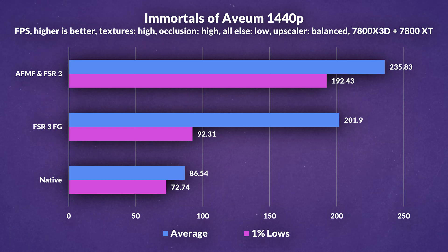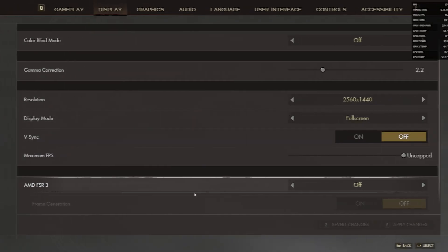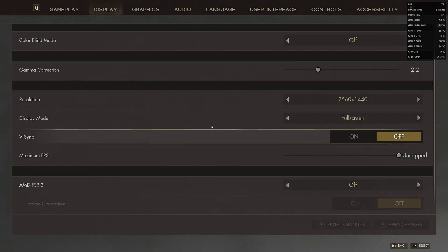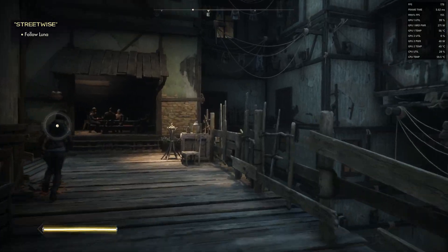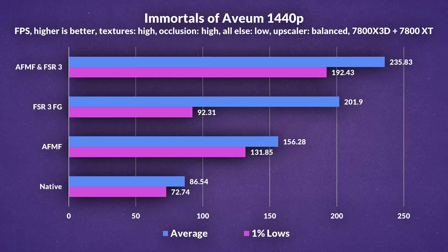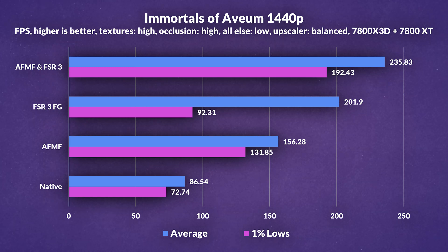The 1% lows are actually a lot lower using FSR 3, but in the real world this didn't really equate to much of a difference in fluidity. Now we've disabled FSR 3 completely and enabled only Fluid Motion Frames on its own. With just AFMF, we're getting around 160 FPS — lower than FSR 3's frame generation. The 1% lows do appear to be a lot higher with AFMF alone. With just AFMF, we got about 156.28 FPS on average and 1% lows around 131.85.